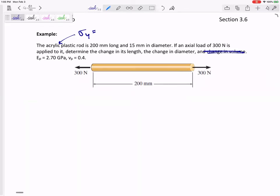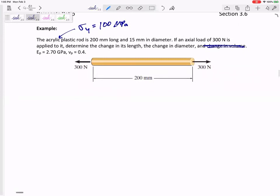Let me give you a few values for this. The yield stress is 100 MPa. The Young's modulus, the modulus of elasticity, is 2.7 GPa. Poisson's ratio is 0.4. So we've got an acrylic plastic rod originally 200 millimeters long, 15 millimeters in diameter, and we put an axial load of 300 newtons to it. Let's determine its change in length and change in diameter.